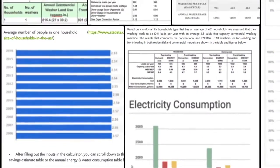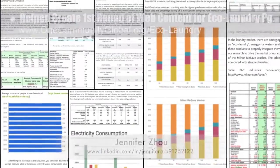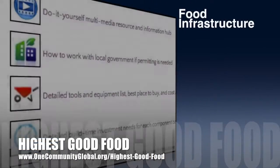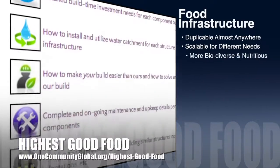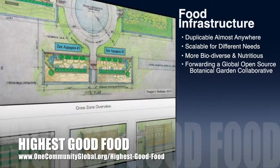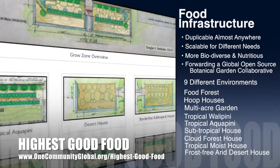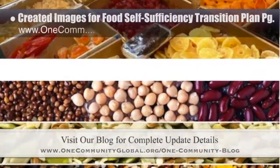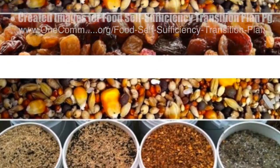Jennifer Zhao, web designer, helped create the first round of website content for the Eco Laundry page. One Community's approach to highest good food is duplicable almost anywhere, scalable for different needs, more biodiverse and nutritious, part of forwarding a global open source botanical garden collaborative, and includes nine different free-shared and duplicable growing environments. This week the core team created three additional new header images for the food self-sufficiency transition plan page.